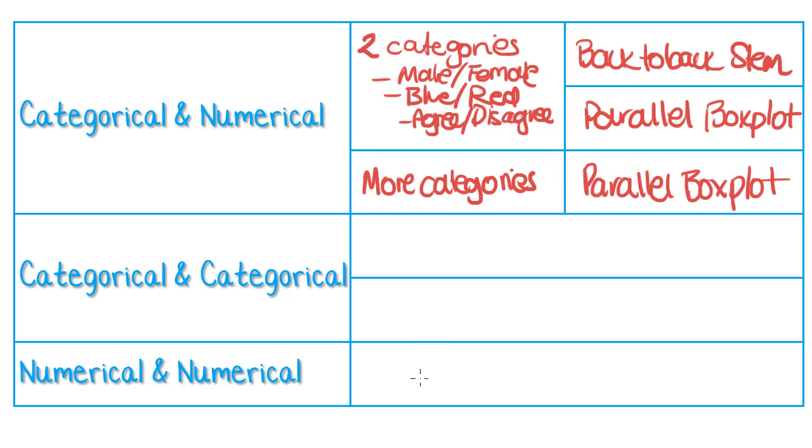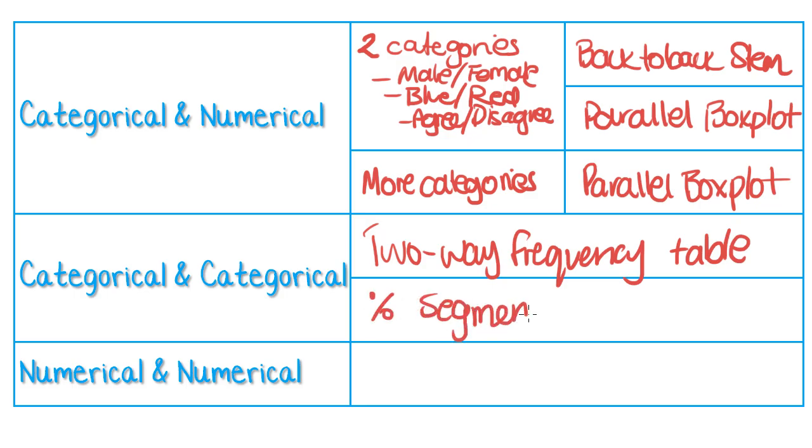What about, you know, blue, red, and whether you agree or disagree with a particular statement, something like that. So, when you have two categorical variables, you represent them either as a two-way frequency table, or you can also put them into a percentage segmented bar chart.